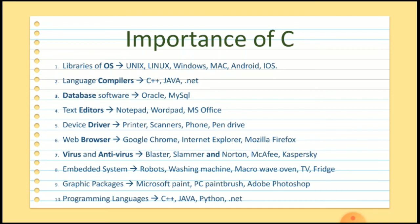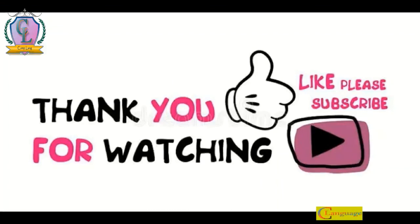Most of the popular computer programming languages which we are using are also created using C language. Languages such as C++, Java, Python, and .NET are created with the help of C language. So that's why even after 50 years, C language is the most used and popular programming language in the world.